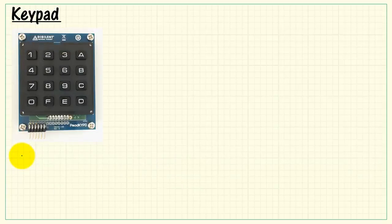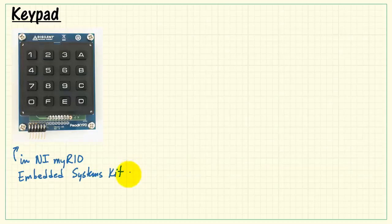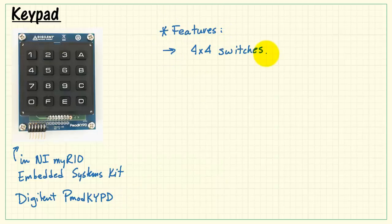This is the keypad that's included in the NI MyRio Embedded Systems Kit. It's the Digilent PMOD KYPD for keypad. Here's some of its features. It has 16 switches arranged in a matrix format. That's 4x4 switches.